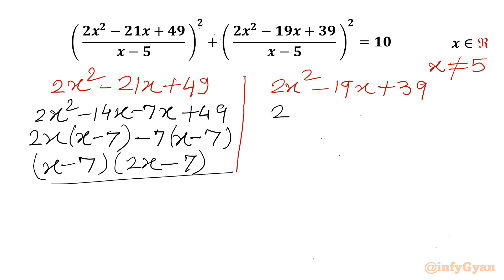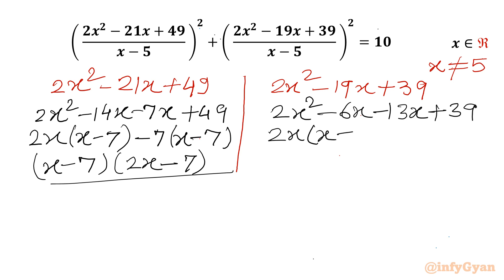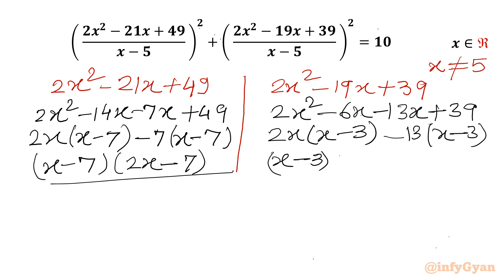For the second expression, 2x² minus 19x plus 39, I will split minus 19x as minus 6x minus 13x plus 39. Now 2x will be common, giving (x minus 3) in the bracket. So the factorization gives factors (x minus 3)(2x minus 13).